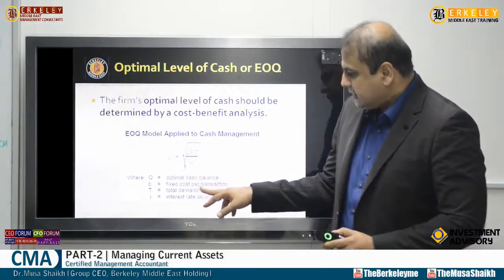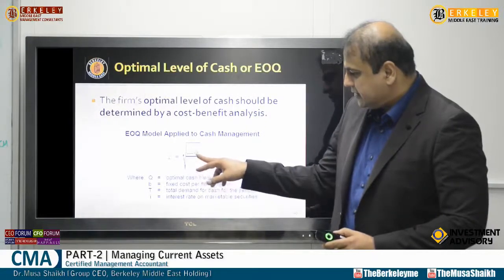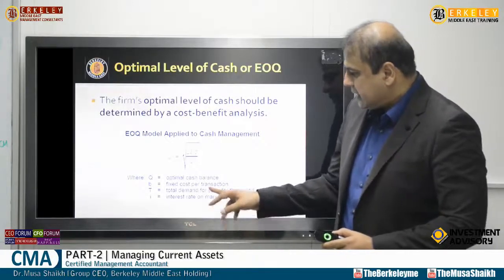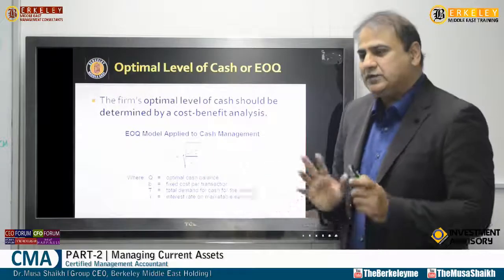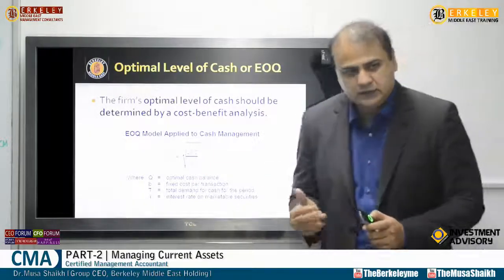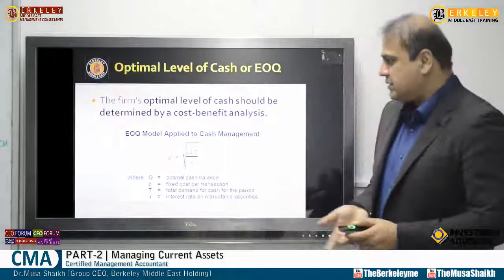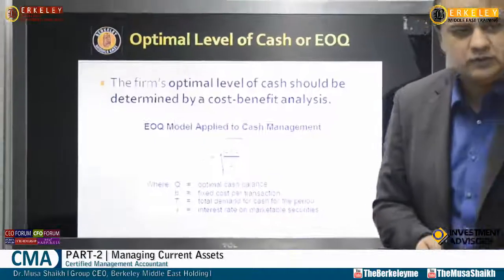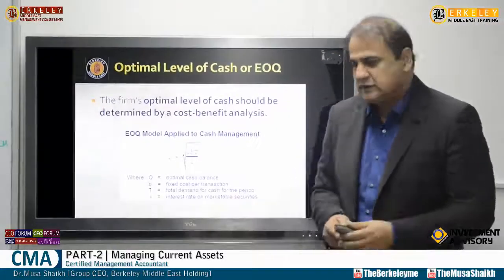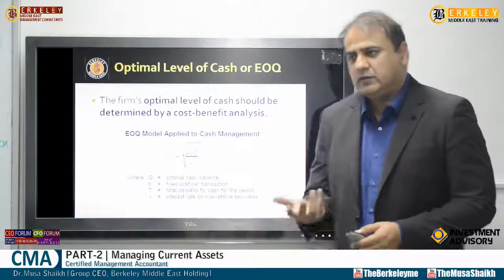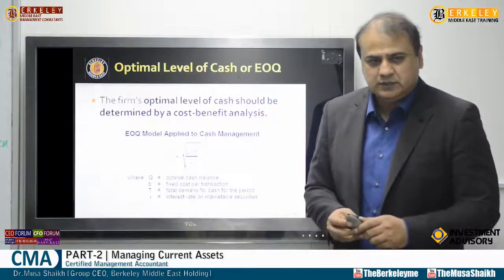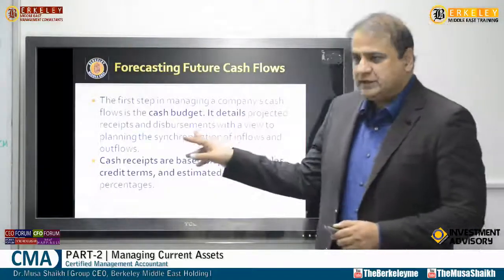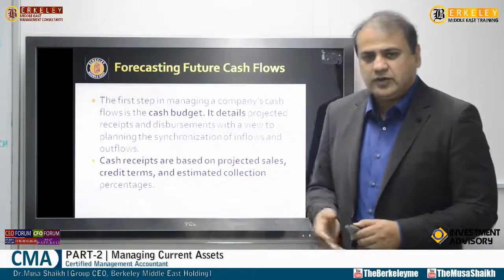In the EOQ model applied to cash, Q is the optimal cash, the fixed cost per transaction is your brokerage fee, T is the total demand for cash in the period, and I is the interest rate being paid. This is essentially the same as the inventory EOQ model. However, this method is not widely used in practice because it is a very general model inspired from inventory theory. The most effective practical method is the cash budget, because the cash budget is going to consider all your specific scenarios.